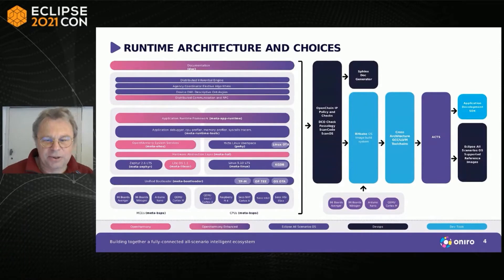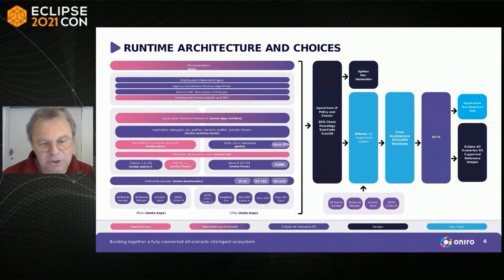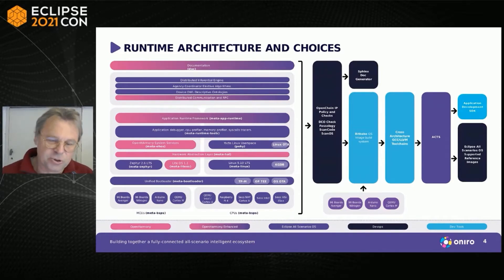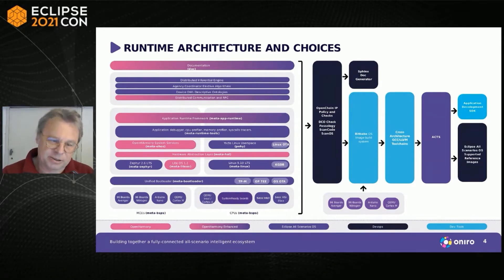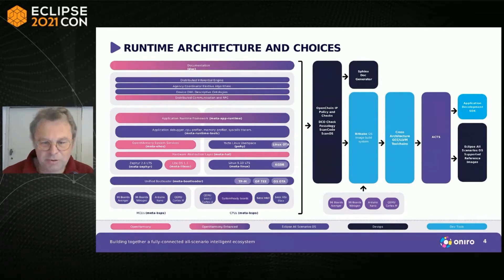That is the Oniro architecture, and at the very bottom you have platforms like the Raspberry Pi and the Seco board — those boards are the first two supported boards, but there should be many more. The way to achieve that is to use System Ready, which is a set of standards.